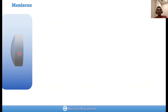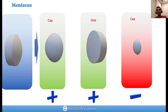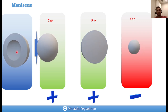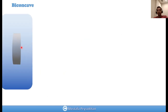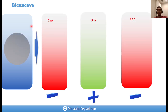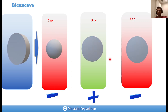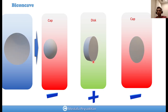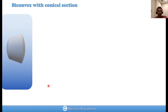For a meniscus lens with one positive surface and one negative surface, we decompose it into a cap, a disc, and a negative cap, because we remove material from that area. Similarly, for a biconcave lens with concave surfaces on both sides, we have a disc with two caps — one on each side — but both caps carry a negative sign because we are removing material from the disc.